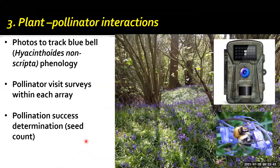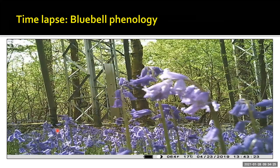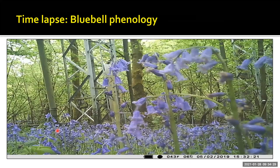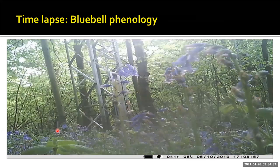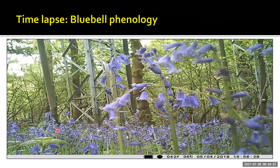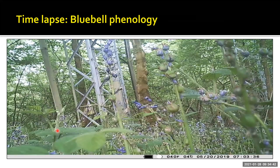Moving on to plant-pollinator interactions: we're looking at a system where there might be a change in flowering phenology and what impact that has on plant-pollinator interactions. We used bluebells because they're conveniently already growing naturally within the FACE arrays — there are patches in every array. We used photos to track changing flowering phenology and had periodic pollinator surveys to record which insect species were visiting flowers. Within bluebells, we have the ability to determine exactly what the seed count is for the different flowers. Time-lapse imagery allowed us to document first flowering, progression through flowering within each plant, and the transition to senescence and seed production, comparing elevated CO2 and control sites.